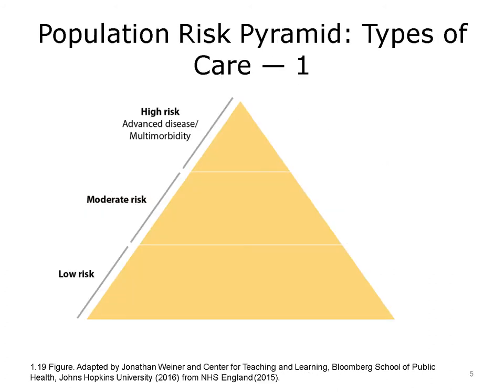Very common for those working in the field of population health is one type of so-called risk pyramid or another. Using this paradigm, we can think about any population group as having persons who fall into rungs of the pyramid, with more people at lower-risk levels to a smaller, higher-risk group at the top. The population to be arrayed in this manner may be defined geographically or by other organizational selection criteria, such as all those persons with one or more chronic diseases who are enrolled at a large physician group practice, or ACO.